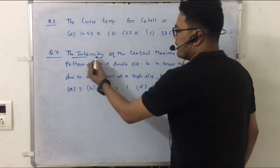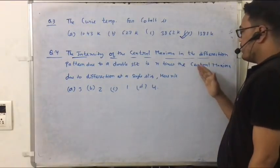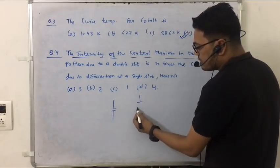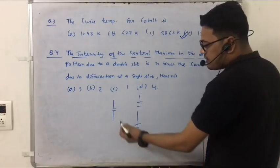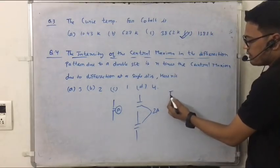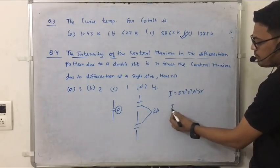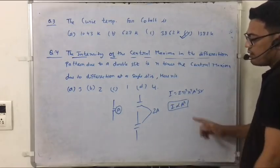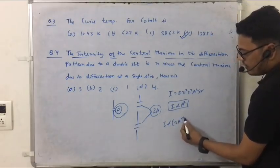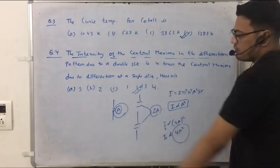The next question is, the intensity of the center maxima in the diffraction pattern due to double slit is n times the center maxima due to diffraction at single slit. Friends, this is a single slit diffraction and a double slit. What happens if this amplitude is a, then the amplitude is 2a. And you know, the intensity formula means intensity is proportional to a square. It means, if this intensity was a, then 2a square means 4a square. It means it will happen 4 times. So the answer will be the option.